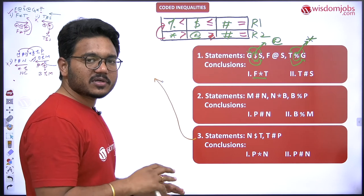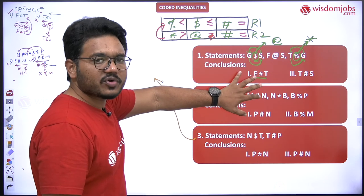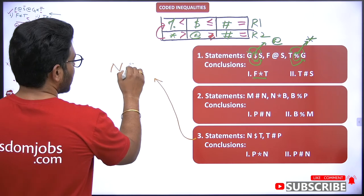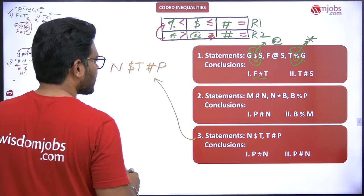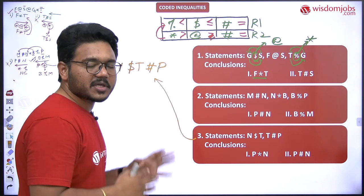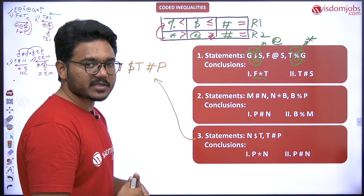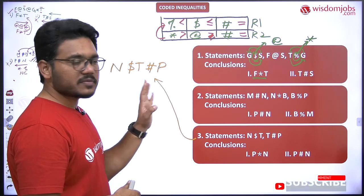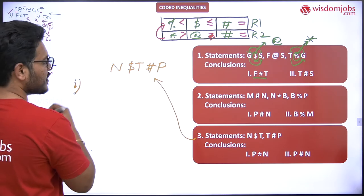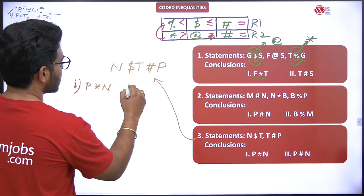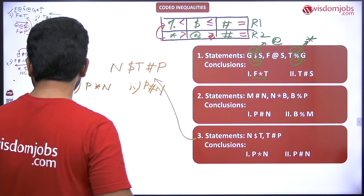Now for question three. This is a simpler case compared to the above two — straightforward to merge. The merged statement is: n dollar t hash p. The conclusions given are: first, p star n (p greater than n), and second, p hash n (p equal to n). Let's establish the relation between p and n.